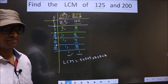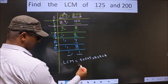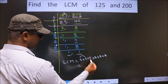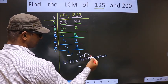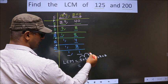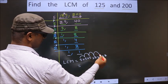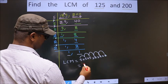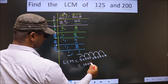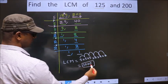Okay, so let us multiply. That is 5 into 5, 25 into 5, 125 into 2, 250 into 2, 500 into 2. We get 1000. So this is our LCM.